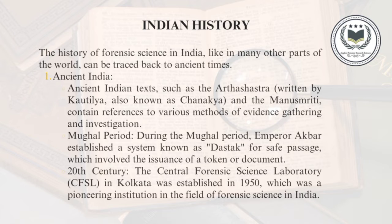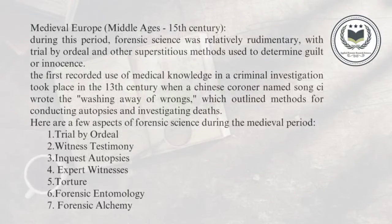In the 20th century, the CFSL Kolkata — the Central Forensic Science Lab Kolkata — was established in 1950 and is now the pioneer institution in the field of forensic science in India. During the Mughal period also, forensic had a significant effect. Emperor Akbar established a system known as Dastak for safe passage, which also involved the use of tokens or documents, touching on some aspects of forensic science.